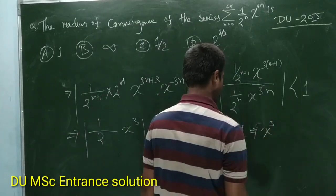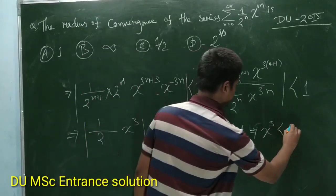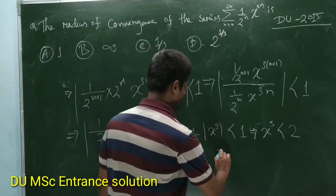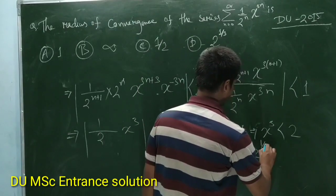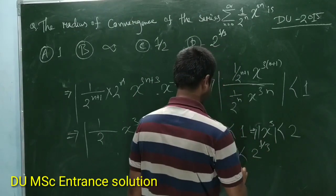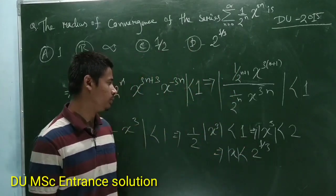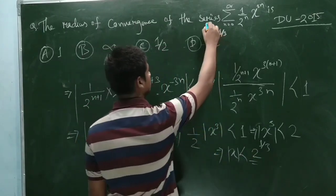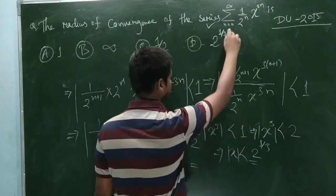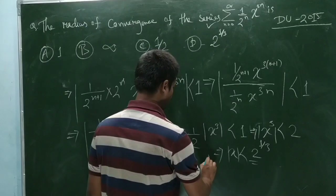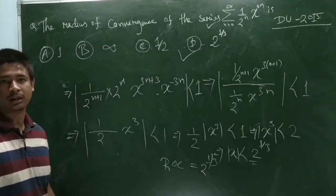So x cubed is less than 2, and from here x is less than 2 to the power 1 by 3. When mod x is less than 2 to the power 1 by 3, this series is convergent. So the radius of convergence of this series is 2 to the power 1 by 3. So 2 to the power 1 by 3 is the correct answer. Thank you.